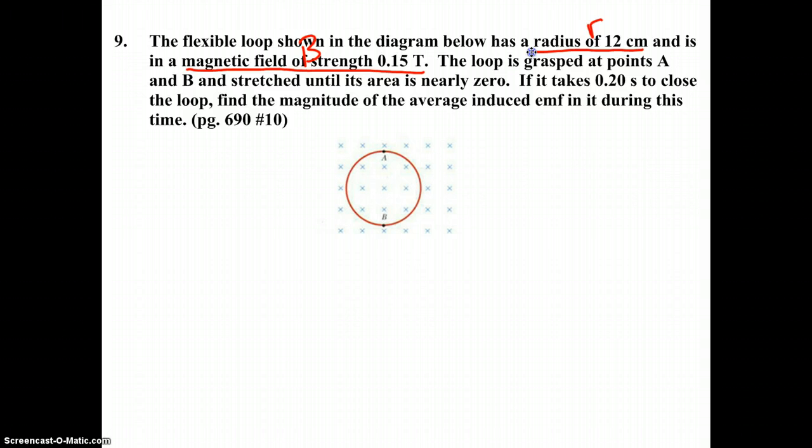The loop is grasped at points A and B and stretched until its area is nearly zero. If it takes 0.2 seconds, that's time, to close the loop, find the magnitude of the average induced EMF in it during this time.